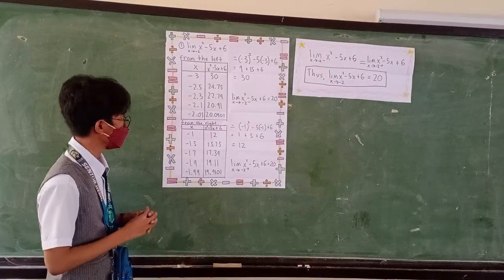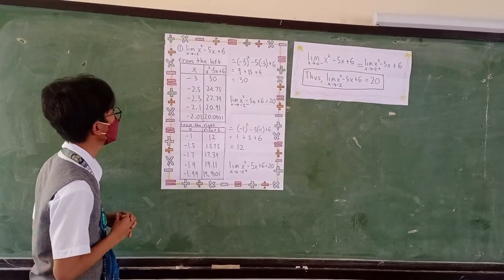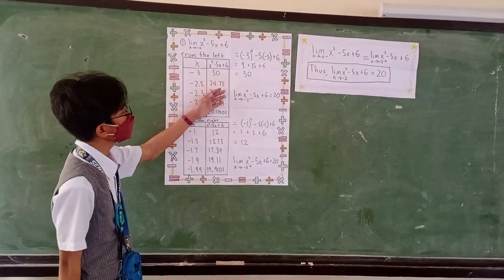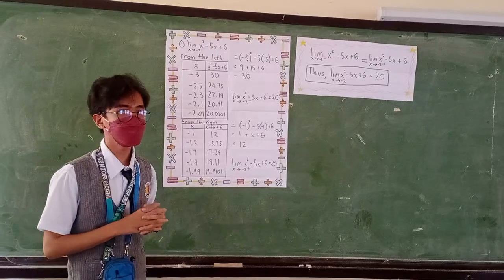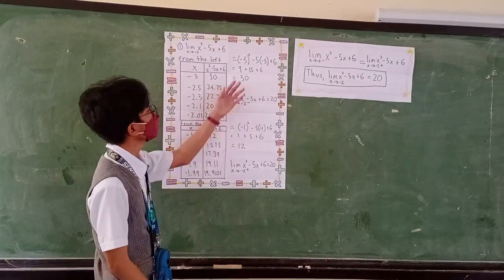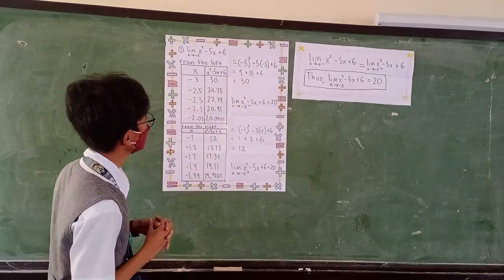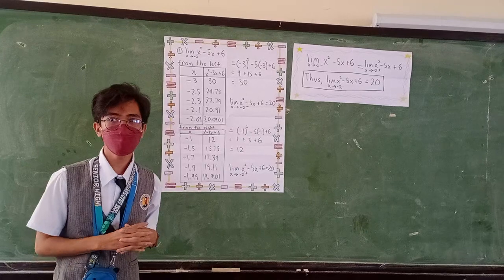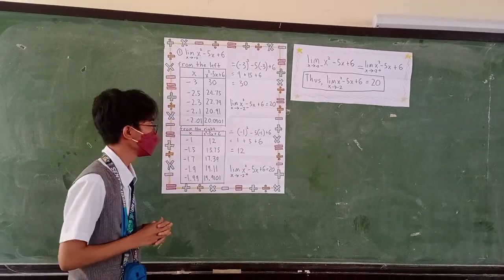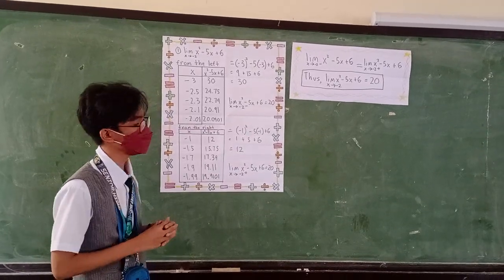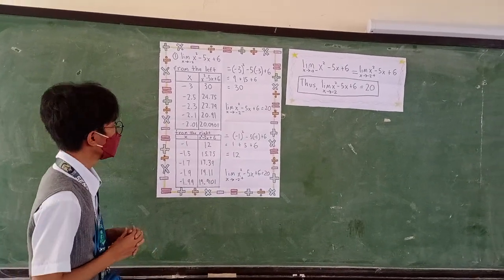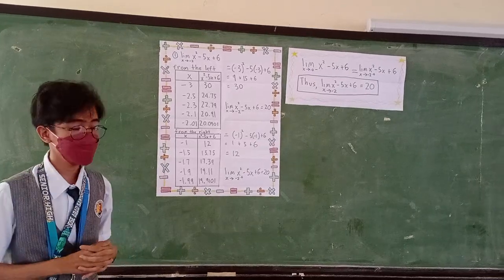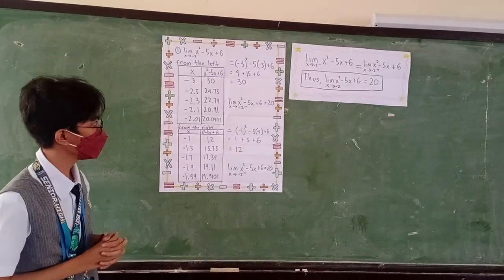So, if we substitute negative 3 into the function, the answer would be positive 30. Negative 3 squared is equal to positive 9. Negative 5 times negative 3 is equal to positive 15, plus 6. So the answer would be positive 30.